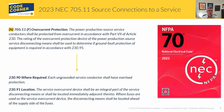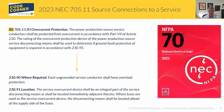When you read 230.90, the very first thing it says is each ungrounded service conductor shall have overload protection. Going to Article 100, the definition of overload covers equipment or a conductor operating in excess of its normal rating or ampacity, which when it persists could damage the conductor or cause dangerous overheating. The definition also clarifies that a fault such as a short circuit or ground fault is not an overload.